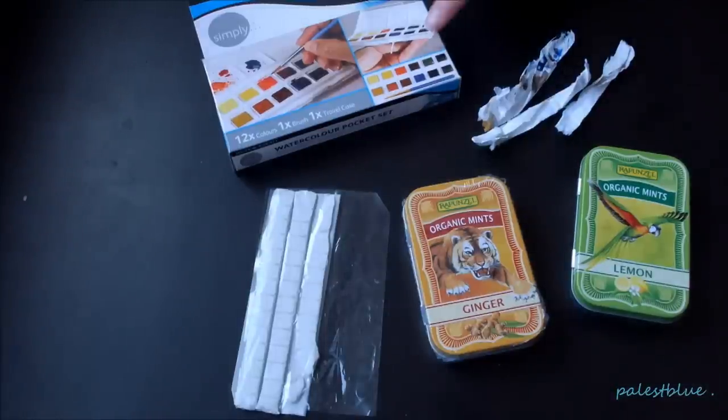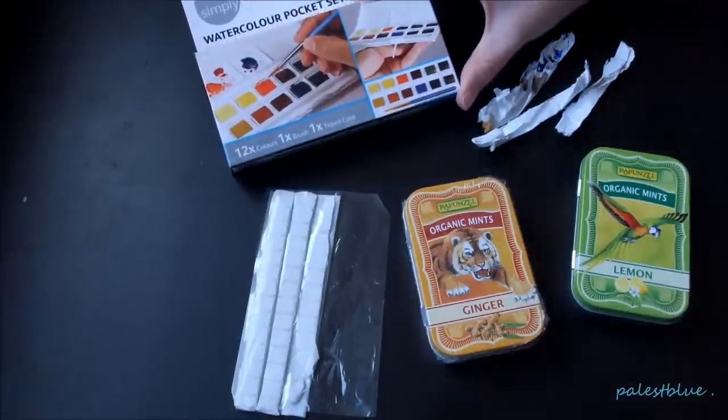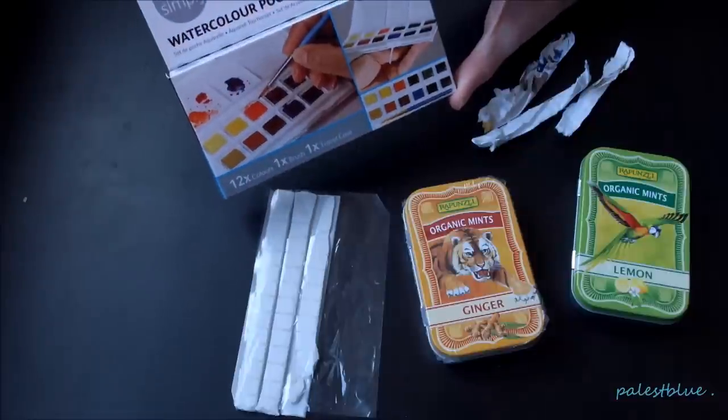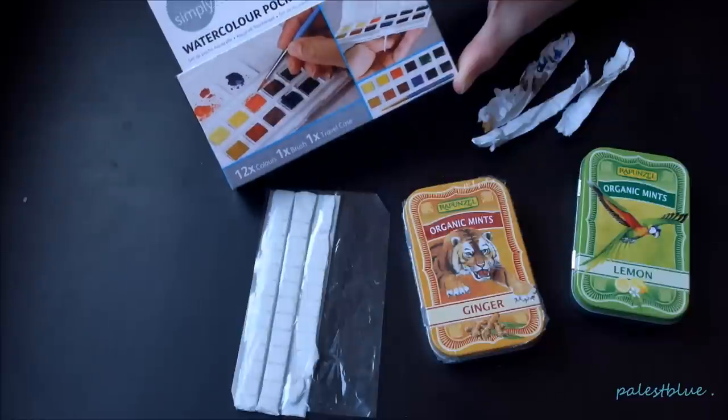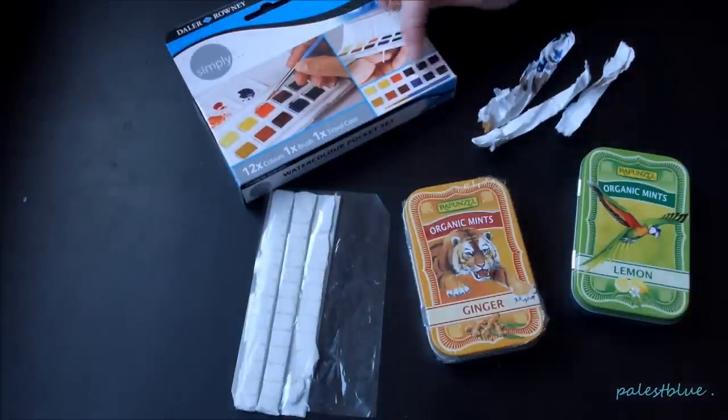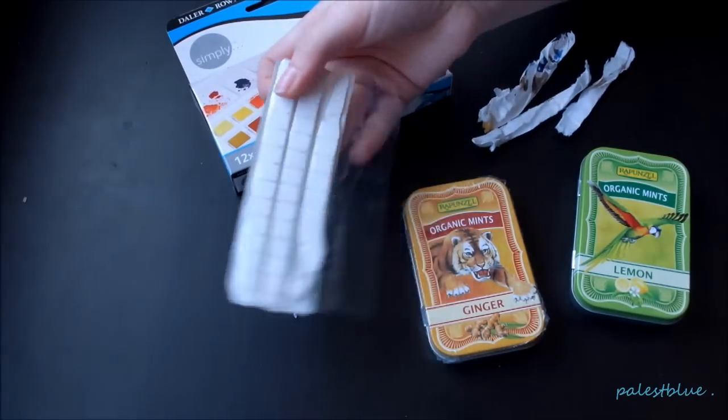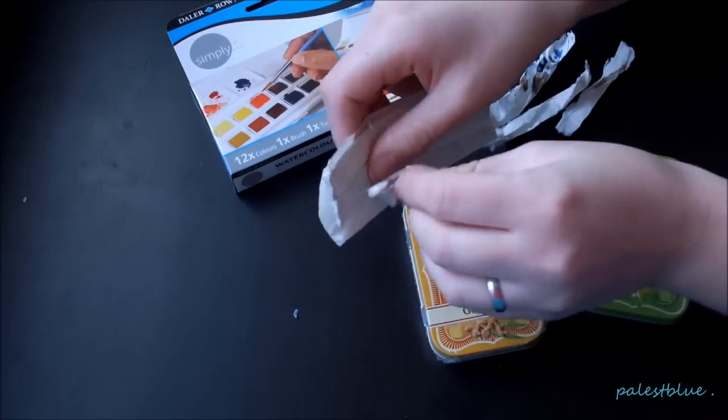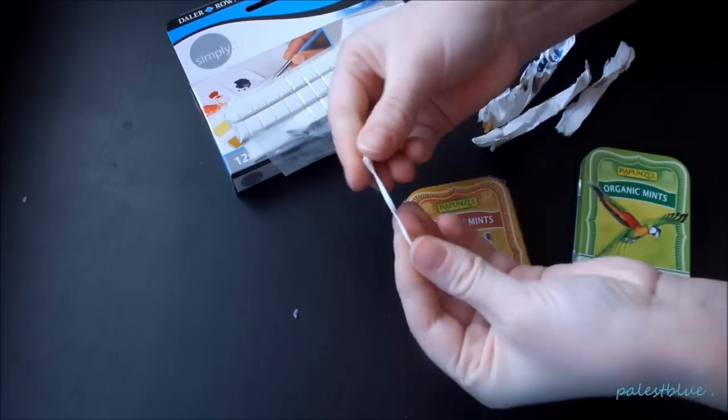So what you will need is some watercolors. You can either buy a watercolor pocket set like this or you could buy the half pens individually if you want to get your favorite colors. Then you will need some glue like this. This is just basically clay glue.